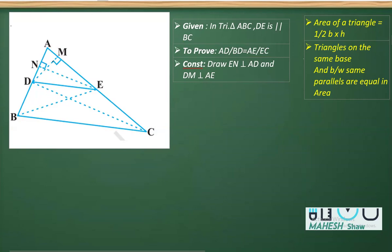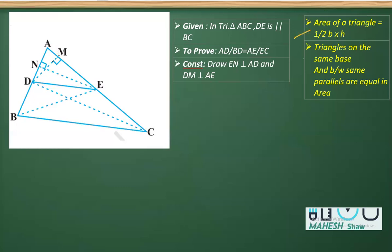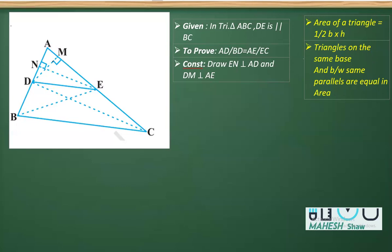In order to prove this theorem, we are going to use two properties: number one is the area of a triangle is half base into height, and two, triangles on the same base and between the same parallels are equal in area.